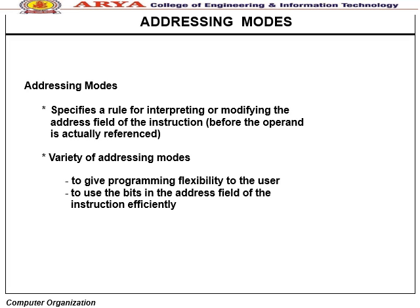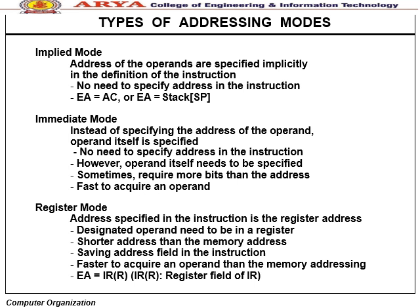Addressing modes specify rules for interpreting or modifying the address field of an instruction before the operand is referenced. They provide programming flexibility and efficient use of address field bits. Types: Implied mode — operand address is implicit in the instruction definition, no address specification needed. Immediate mode — the operand itself is specified rather than its address; no address needed, but more bits may be required; fast to acquire an operand.